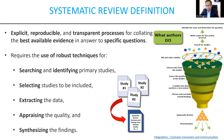By definition, systematic reviews are very reproducible and explicitly defined studies that use a transparent process for collecting the best available evidence to answer a very specific question. They use robust techniques at every step, from searching for and identifying articles, selecting which ones to include and exclude, extracting the data, appraising the quality and bias inherent in each study, and finally synthesizing the data into something very digestible for the reader.